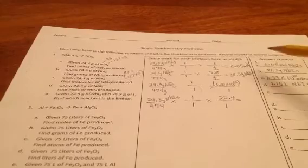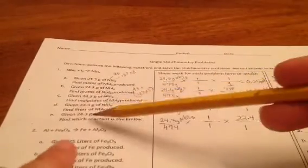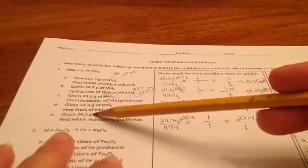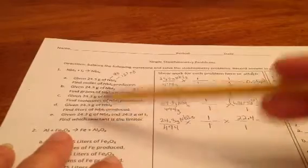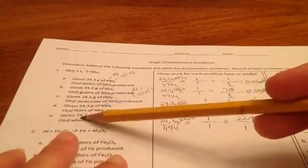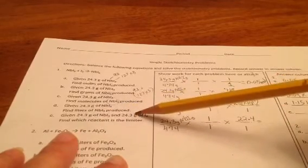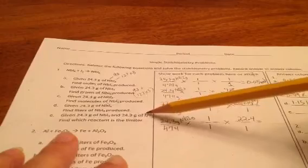I'm now going to solve single stoichiometry problem 1E from the worksheet. In this problem, it's actually a two-part problem. Each of them is a single problem, but I've been given 24.3 grams of NBI3 and 24.3 grams of I2.